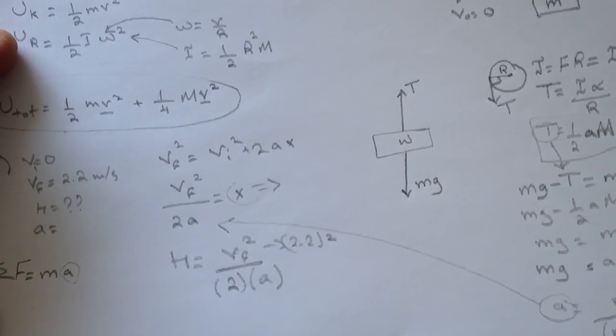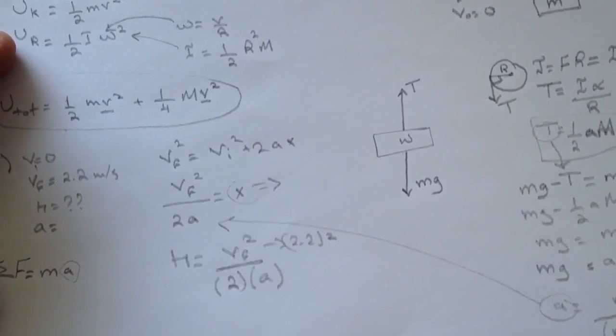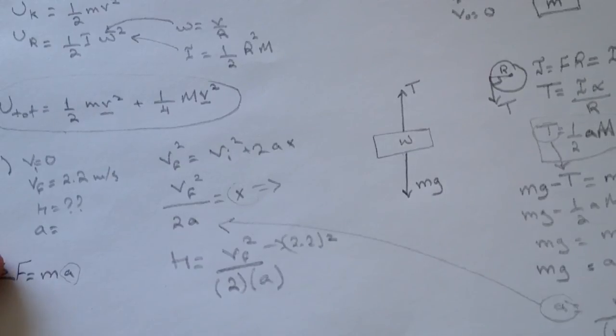Question number three asks what is the angular acceleration at this point. The easiest way to do this is by saying the angular acceleration equals a over r.